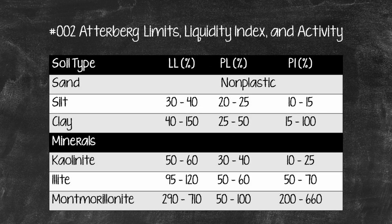Typical values for the Atterberg limits are shown in this table. The Atterberg limits depend on the type of predominant mineral in the soil. If Montmorillonite is the predominant mineral, the liquid limit can exceed 100%, because the bond between layers in Montmorillonite is weak and large amounts of water can easily infiltrate the spaces between layers. In the case of Kaolinite, the layers are held relatively tightly and water cannot easily infiltrate between them. Therefore, the Atterberg limits for Kaolinite are, in general, much lower than those for either Montmorillonite or Illite.